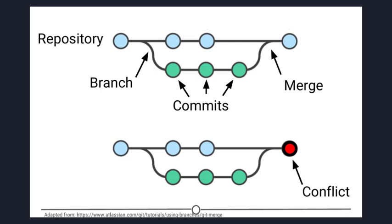But you can see a potential problem here. If both people made an edit to the same sentence that precludes one of the edits from being possible, we have a problem. Git recognizes this disparity or conflict and asks for user assistance in picking which edit to keep.